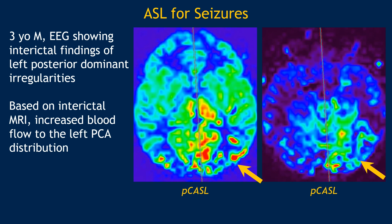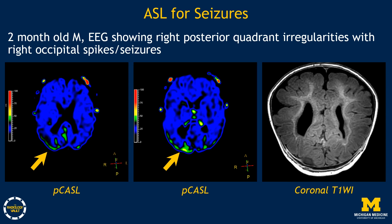ASL can also be used for seizures. A young three-year-old had EEG showing interictal findings of left posterior dominant irregularities, and ASL showed increased perfusion or increased blood flow to the left posterior PCA territory. Another young child at two months of age showed right posterior quadrant irregularities on EEG, with elevated perfusion into the right occipital lobe. On T1-weighted coronal imaging, the brain was very unusual, showing a lot of dysplastic cortices.